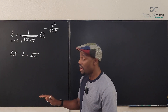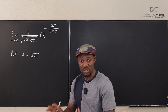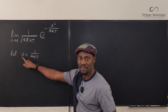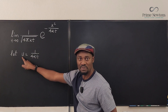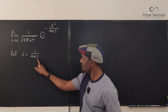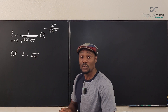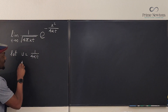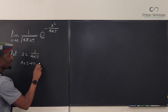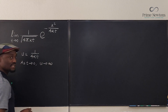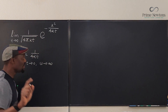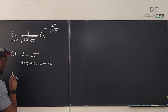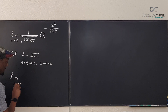With u = 1/(4kt), I can conclude that as t goes to zero, u goes to infinity — just imagine plugging zero in: it gives one over zero, which is infinity. So this original problem, instead of writing t goes to zero, I'm going to write it as the limit as u goes to infinity.